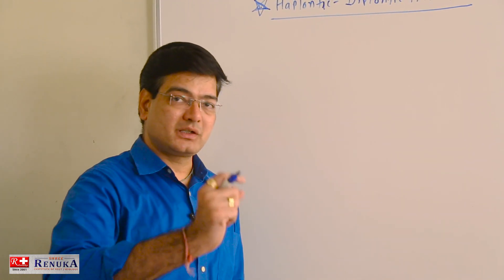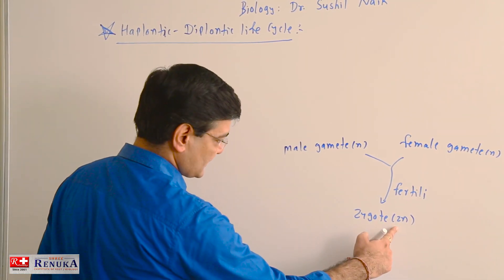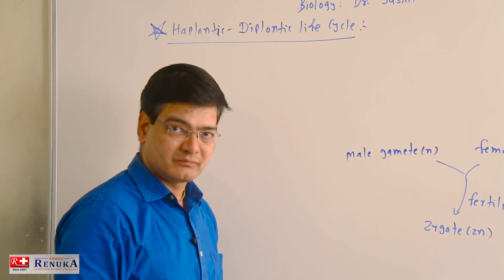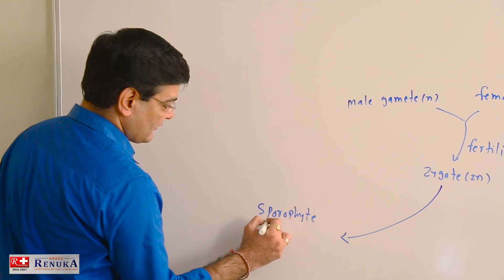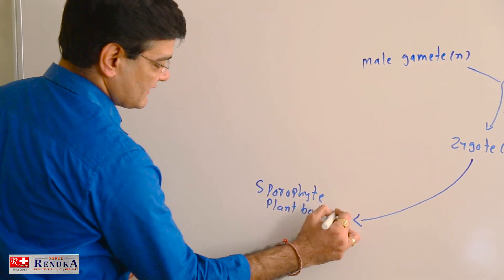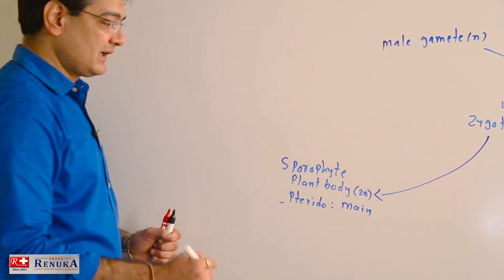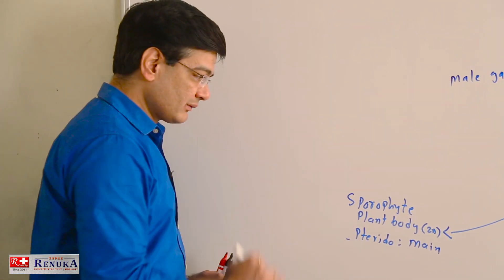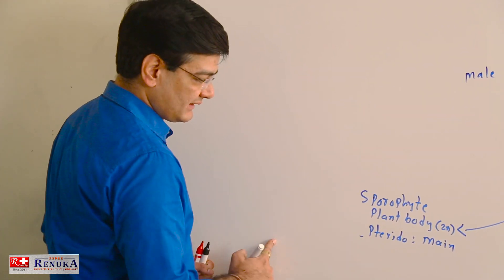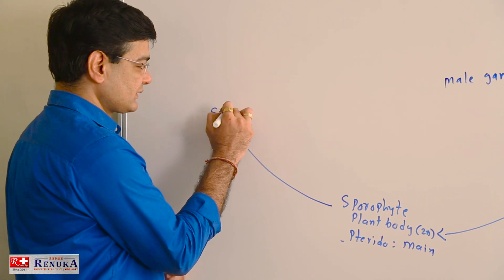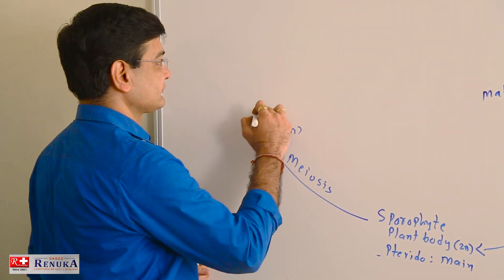In bryophyta and pteridophyta, male and female gametes undergo fertilization or syngamy to form a zygote. The zygote is the first cell of the sporophytic plant body. In pteridophyta, this zygote is transformed into a diploid sporophyte, which is the main plant body. It has independent existence, is long-lived, carries out photosynthesis, and is therefore the dominant phase. This sporophytic plant body produces spores by meiosis, and these spores are haploid.